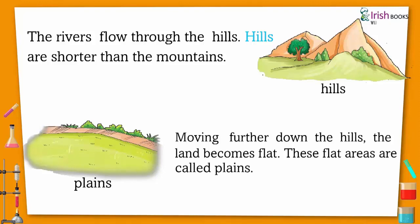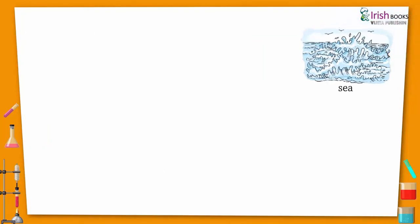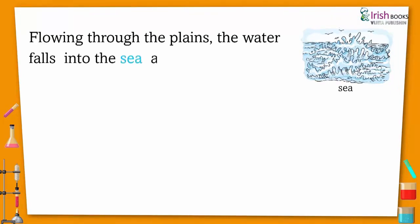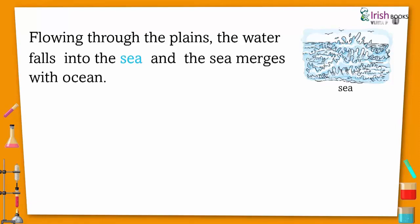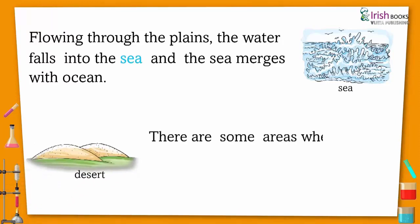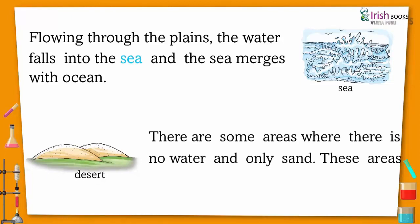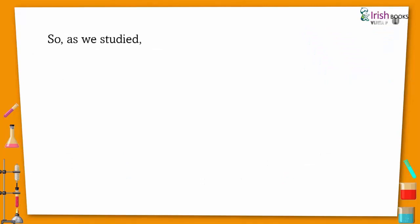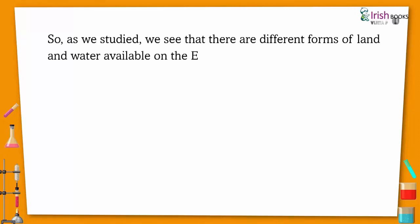Moving further down the hills, the land becomes flat. These flat areas are called plains. Flowing through the plains, the water falls into the sea, and the sea meets the ocean. There are some areas where there is no water and only sand. These areas are called deserts.